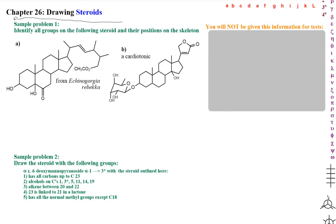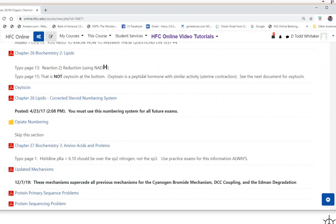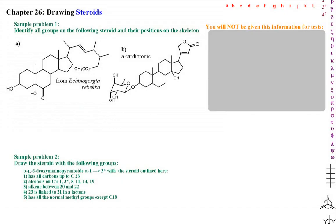In this video, we're going to first learn how to identify groups on steroids, and then we're going to learn how to draw them. There's a handout available to you at HFC Online, found in our Chapter 26 Corrected Steroid Numbering System. We have to use this system, but you don't have it available on tests — this information will not be given to you on tests.